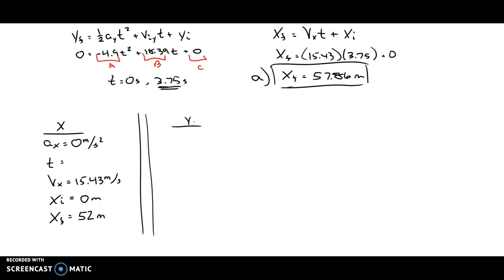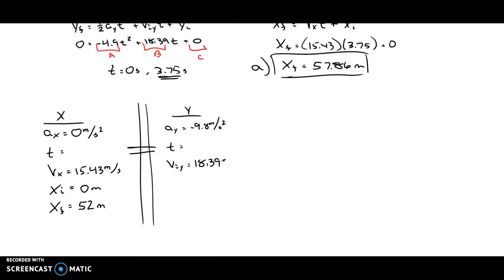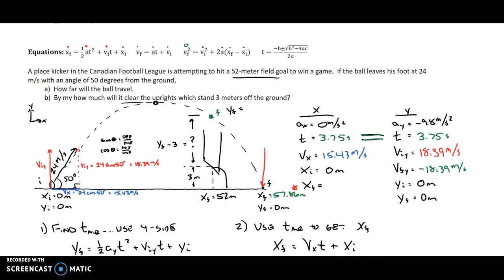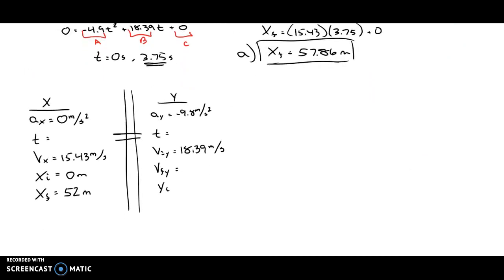In the Y direction, our acceleration is always negative 9.8 meters per second squared. Our time is going to be the same time we get on the X side. Our initial velocity in Y is still 18.39 meters per second — the Y component of that 24 m/s velocity. The final velocity in Y will be some new speed at that height, not the full 18.39. Since the question doesn't ask about the speed as it passes the uprights, we won't need to calculate that. The initial position in Y is still on the ground, and the final position is what we're trying to find — the vertical location when it passes the uprights.